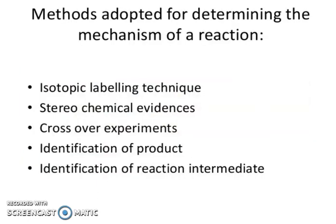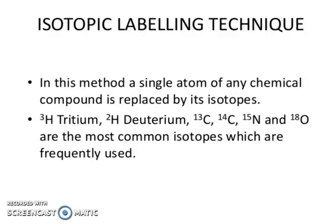The methods adopted for determining the mechanism of a reaction are: first, isotope labeling techniques; second, stereochemical evidence; third, crossover experiments; then, identification of products; and then, identification of reaction intermediates. So let us start with the isotope labeling technique.